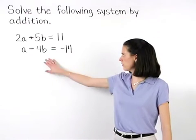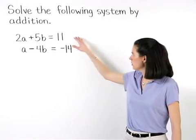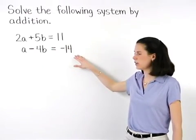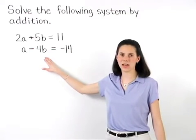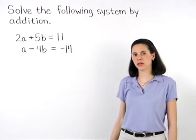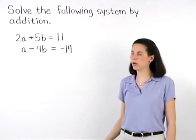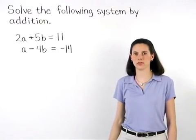To solve this system of equations by addition, notice that when we add the two equations together, neither one of our variables will cancel out. In this situation, we need to set things up so that when we do add the equations together, one of our variables will cancel out.